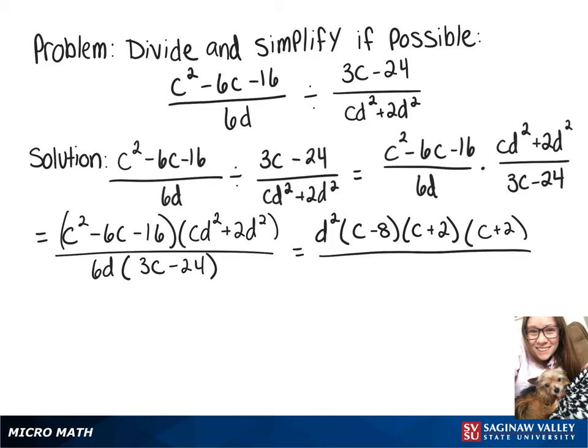On bottom, we still have our 6d, and then we can factor a 3 out of that 3c minus 24, leaving us with c minus 8.